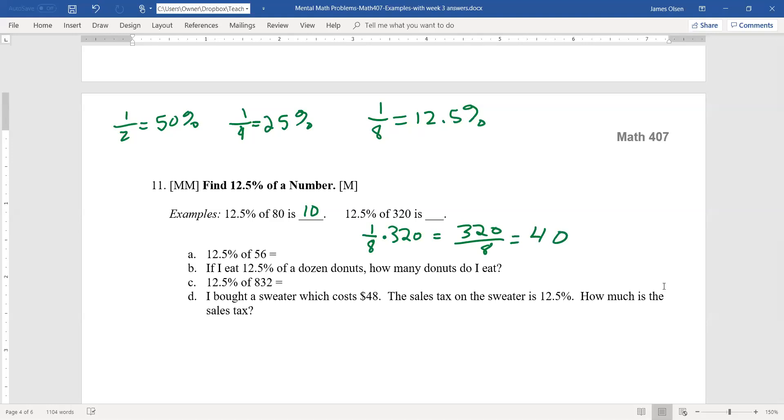So to find 12.5% of a number, just divide by 8. And have a great day.